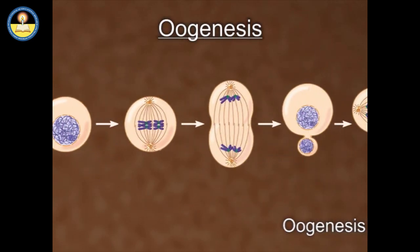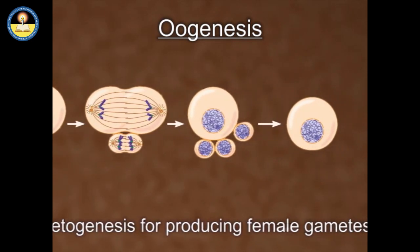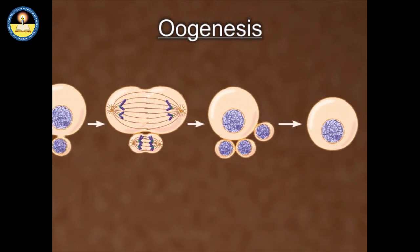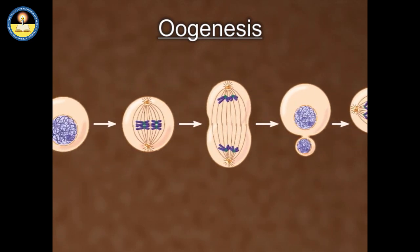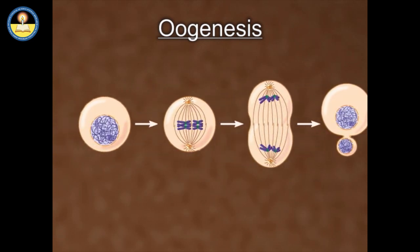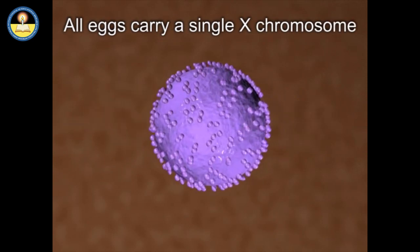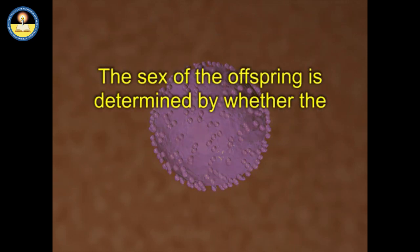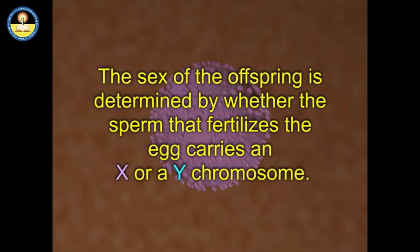Oogenesis is a type of gametogenesis for producing female gametes, that is, ovum. Like spermatogenesis, oogenesis also involves the creation of haploid sex cells through the process of meiosis. The female is the homogametic sex because all eggs carry a single X chromosome. The sex of the offspring is determined by whether the sperm that fertilizes the egg carries an X or a Y chromosome.